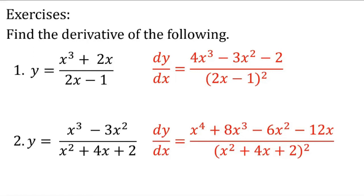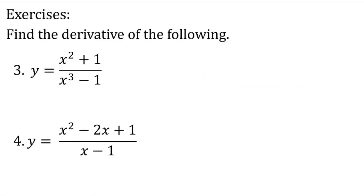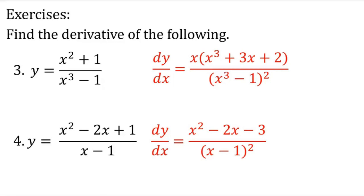Exercises: find the derivative of the following. Number 1: y equals x cubed plus 2x all over 2x minus 1. Number 2: y equals x cubed minus 3x squared all over x squared plus 4x plus 2. Number 3: y equals x squared plus 1 all over x cubed minus 1. Number 4: y equals x squared minus 2x plus 1 all over x minus 1. The answers are already given so you can check whether your answer is correct. I hope you get the correct answer. Alright, thank you.